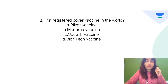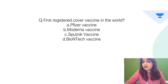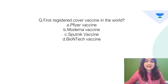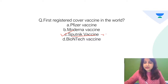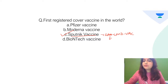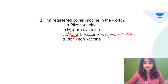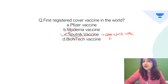What was the name of the first registered COVID vaccine in the world? It was not the Pfizer vaccine — it was the Sputnik vaccine, also known as GAM-COVID-VAC. This was developed by the Gamaleya Research Institute in Russia. So the first registered COVID vaccine in the world was the Sputnik vaccine, developed in Russia.